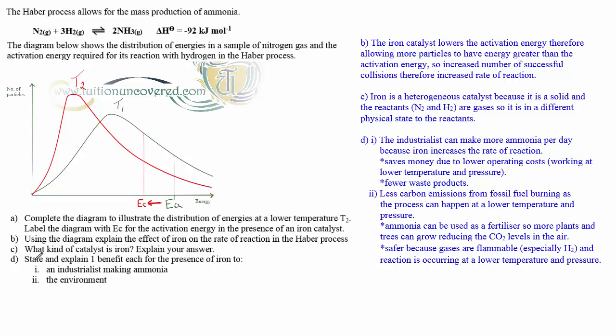Part D, one. Explain one benefit each for the presence of iron to an industrialist making ammonia. Well, to an industrialist, the industrialist can make more ammonia per day because iron increases the rate of reaction. Other answers, you could have said, saves money due to lower operating costs, working at lower temperature and pressure than, of course, to reduce waste products.